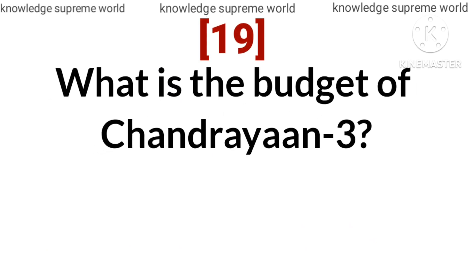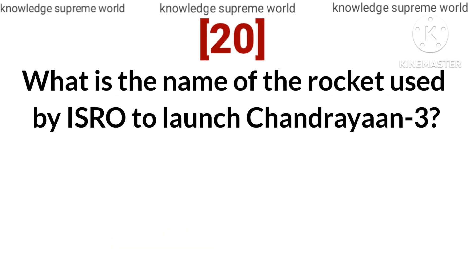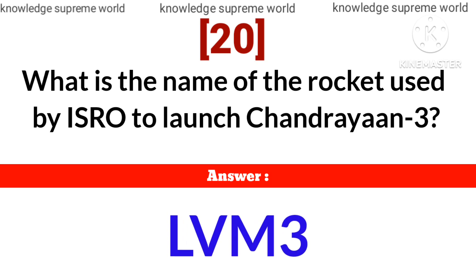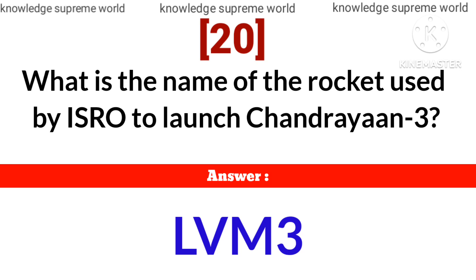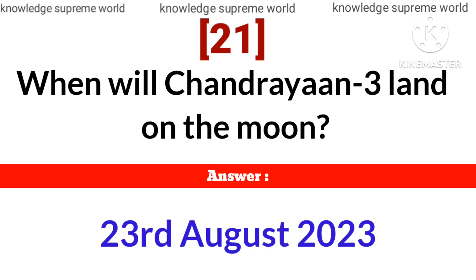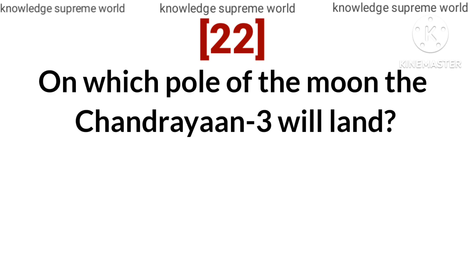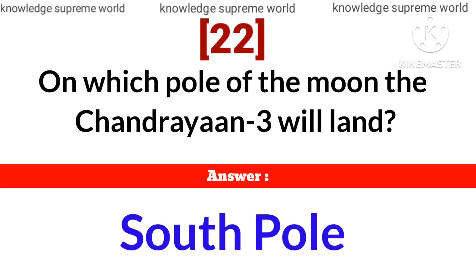What is the budget of Chandrayaan 3? What is the name of the rocket used by ISRO to launch Chandrayaan 3? When will Chandrayaan 3 land on the moon? Answer: 23rd August 2023. On which pole of the moon will Chandrayaan 3 land? Answer: South Pole.